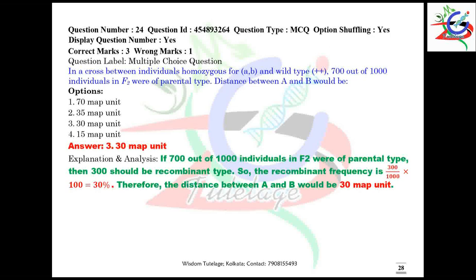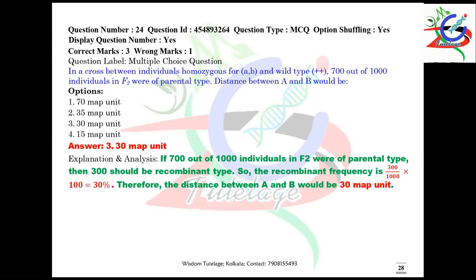Question number 24: in a cross between individuals homozygous for 'ab' and wild type (++), 700 out of 1000 individuals in F2 were of parental type. The distance between gene A and gene B would be calculated by finding recombinant frequency: 300/1000 × 100 = 30%, meaning 30 map units.